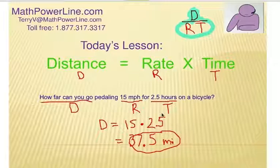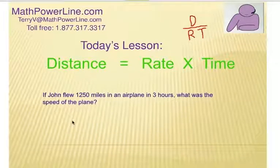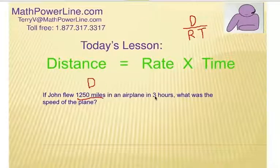Here's another example. If John flew 1,250 miles in an airplane in three hours, what was the speed of the plane? All right, so 1,250 is distance. That's the distance travel. The three hours is the time of travel, so that's my T. And what was the speed of the plane? Obviously, that's got to be the R.